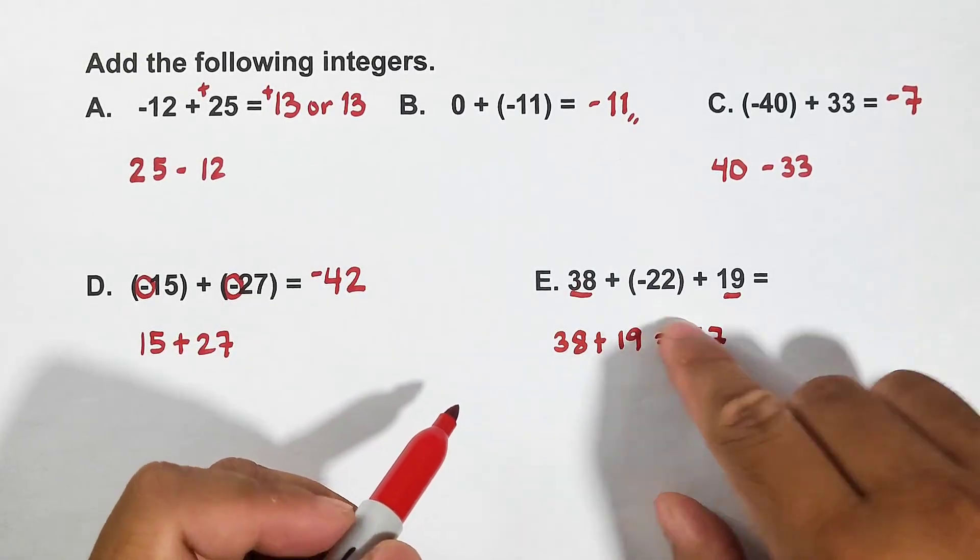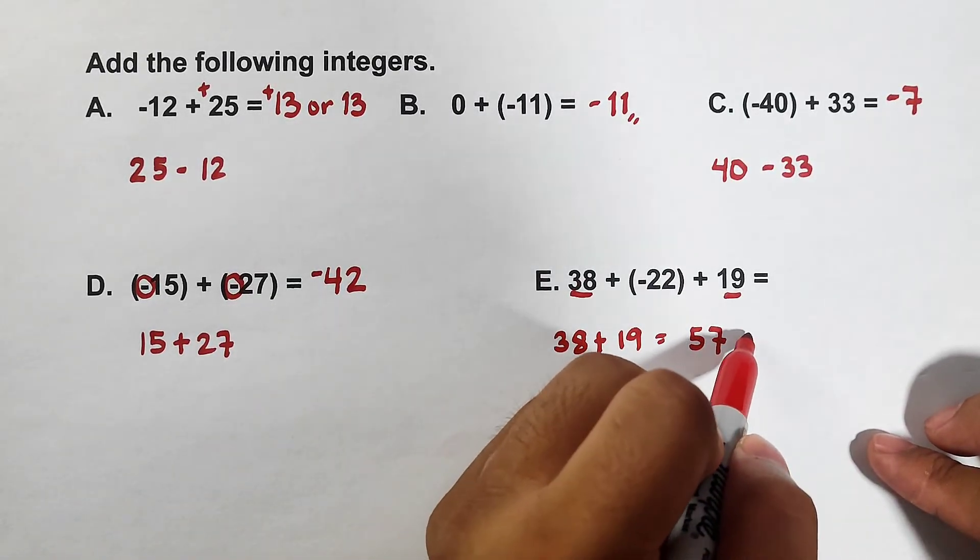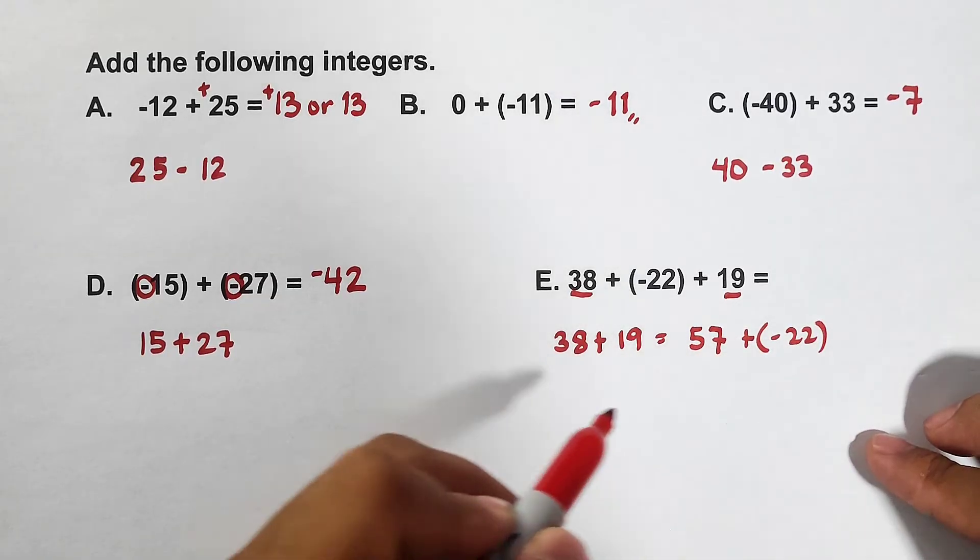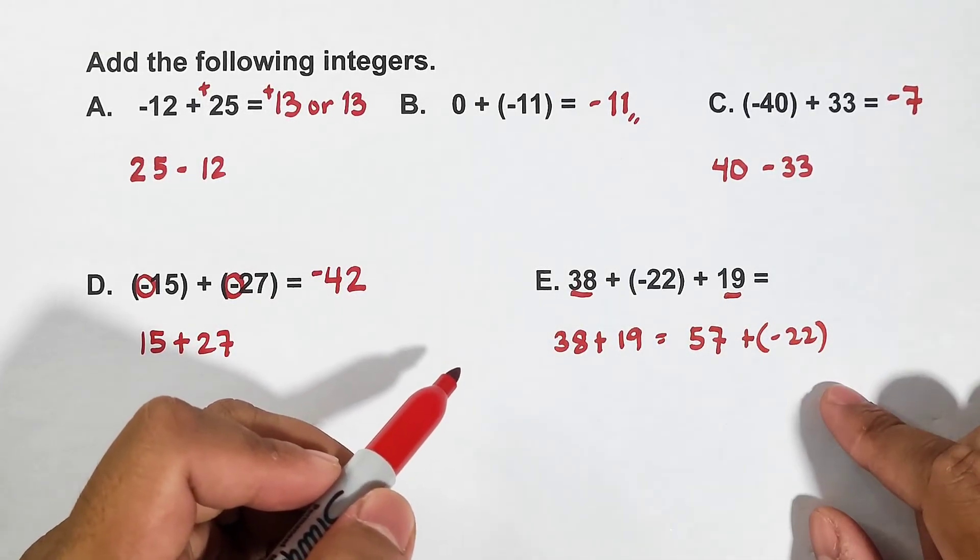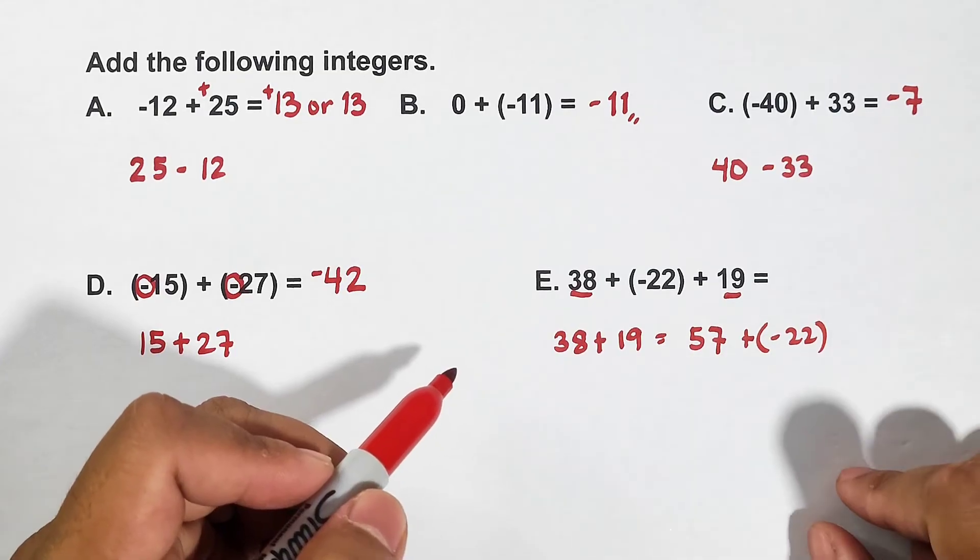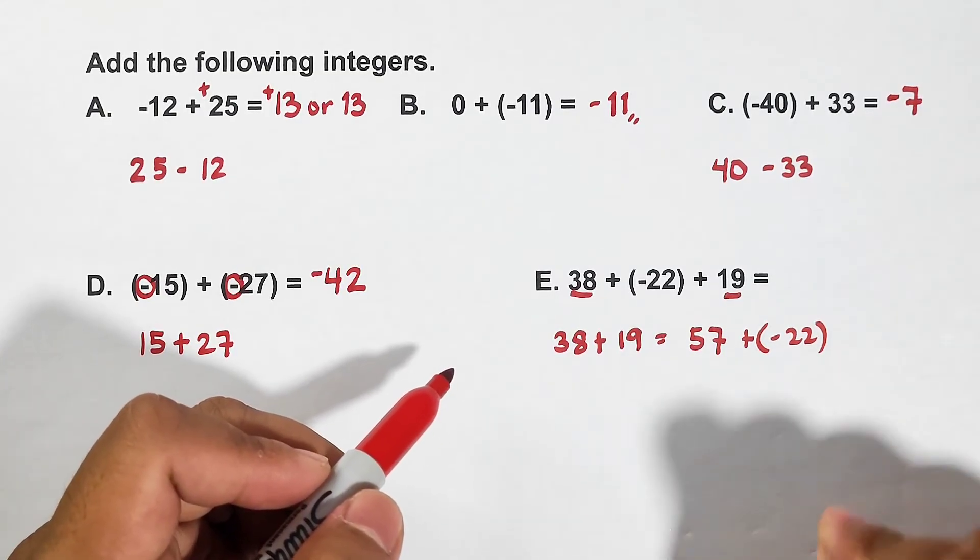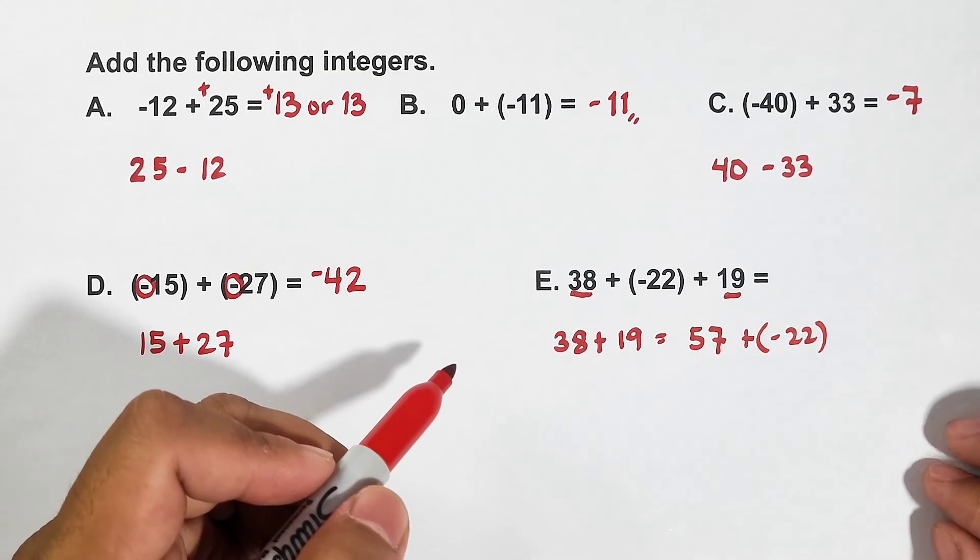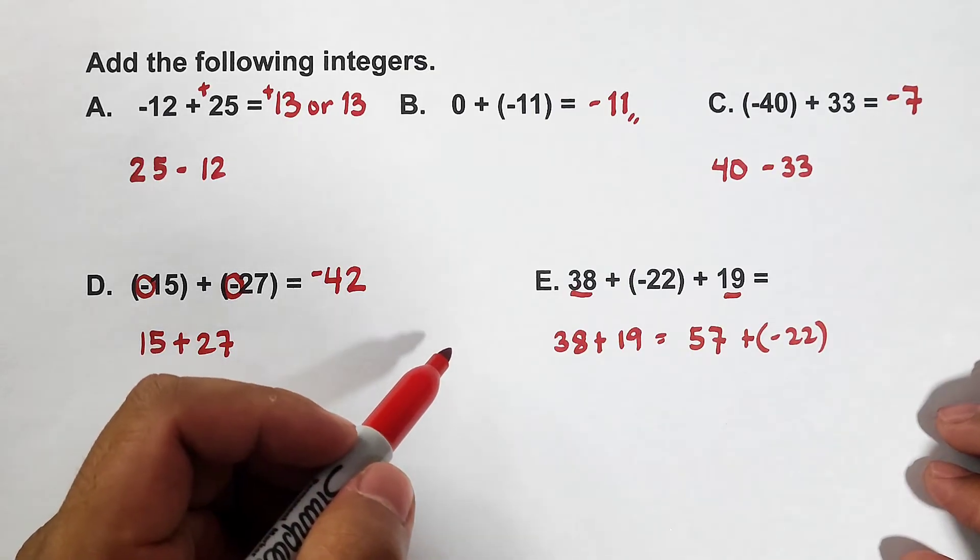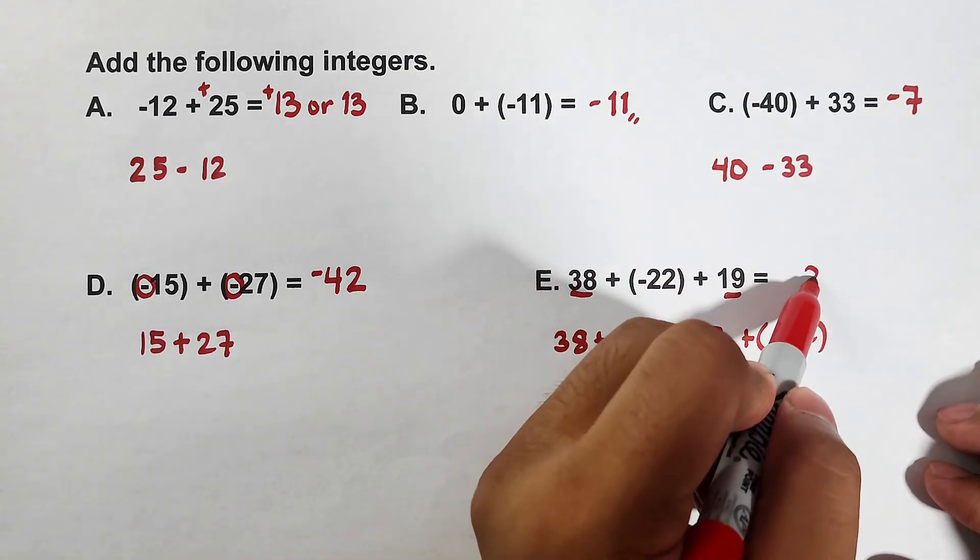Then I have negative 22. So I have plus negative 22. As you can see, different signs. So you can do here, subtract them. 57 plus negative 22. That is 35.